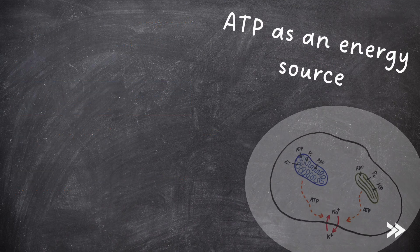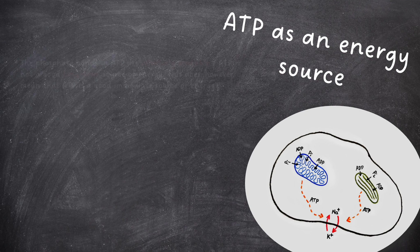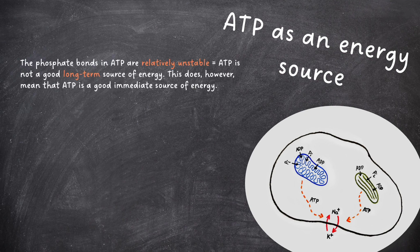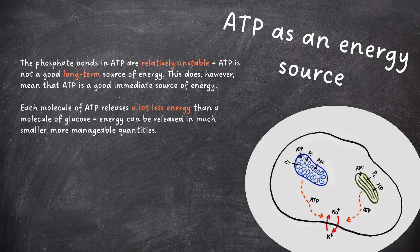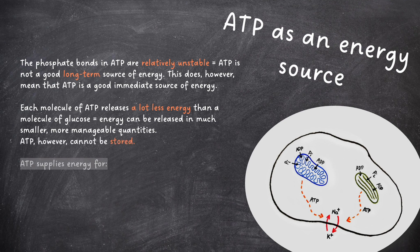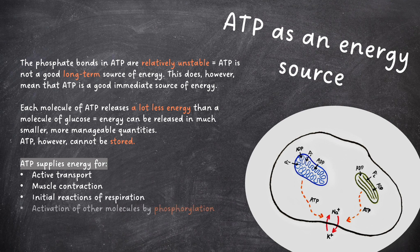Let's have a look at ATP as an energy source. The phosphate bonds in ATP are relatively unstable, meaning that ATP is not a good long-term source of energy. However, this does mean that ATP is a good immediate source of energy. Each molecule of ATP releases a lot less energy than a molecule of glucose, so energy can be released in much smaller, more manageable quantities. ATP, however, cannot be stored. ATP supplies energy for active transport, muscle contraction, the initial reactions of respiration, the activation of other molecules by phosphorylation, and the synthesis of macromolecules such as polypeptides.